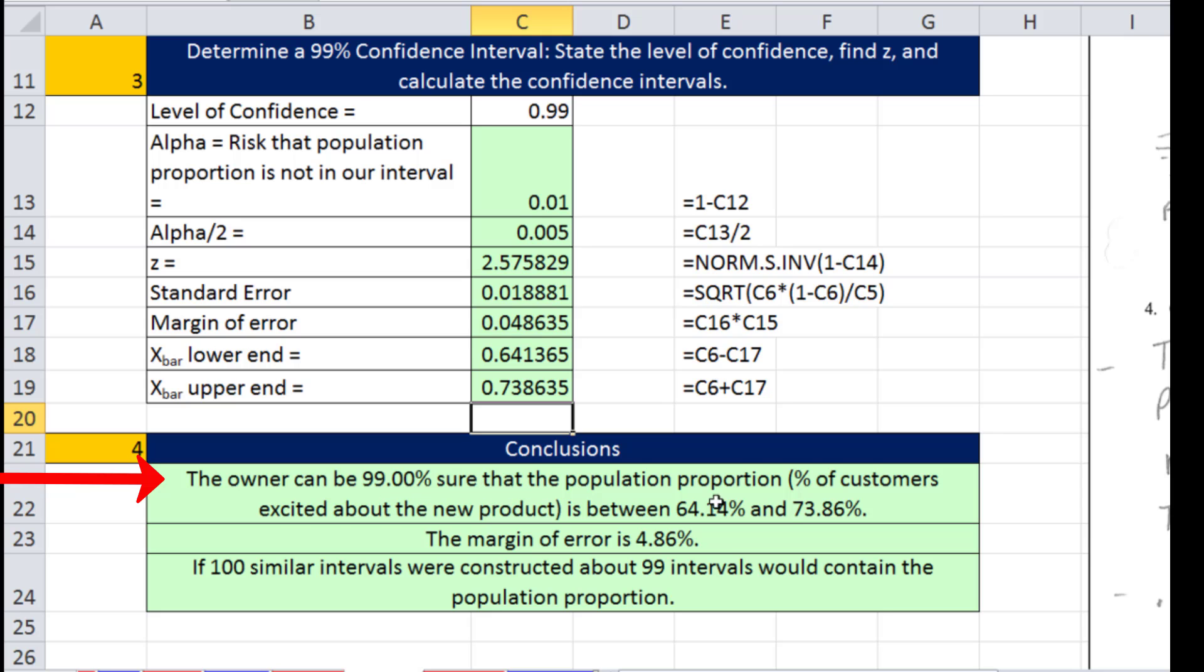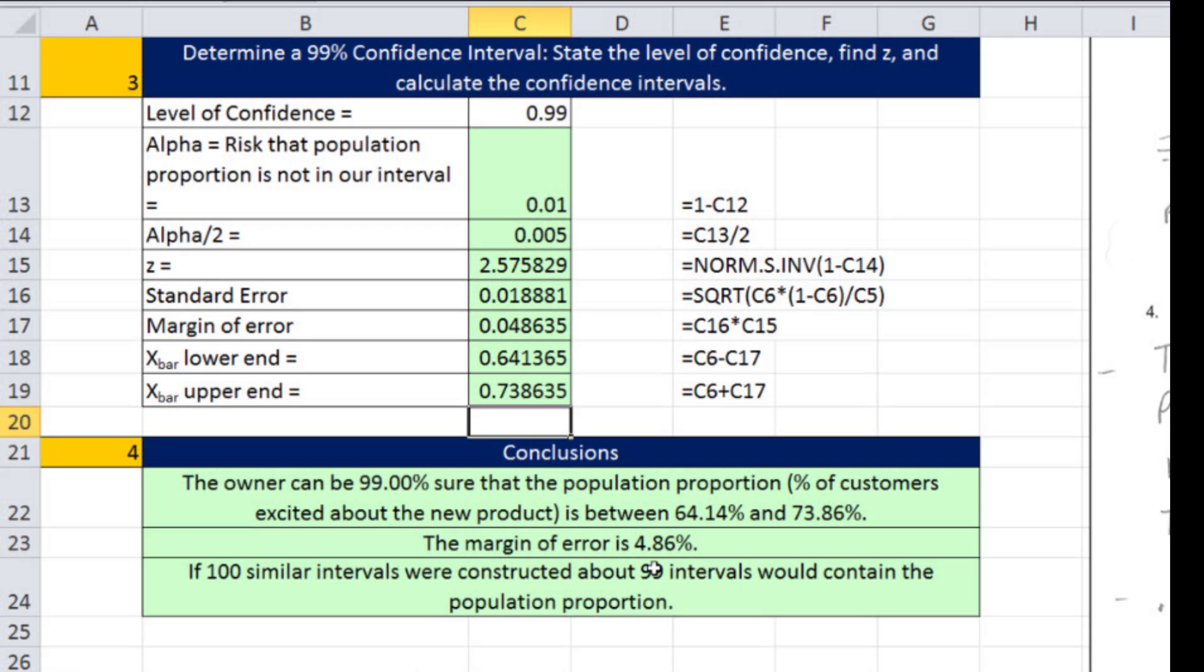The owner could be 99% sure that the population proportion of customers excited about the new product is between about 64% and about 74%. Pretty good proportion of customers that are excited, so the owner says maybe we should launch this product. So that's it for chapter 8. Next chapter, chapter 9, we're going to talk about hypothesis testing. See you next video.